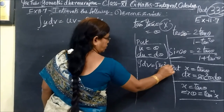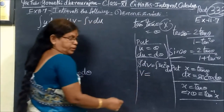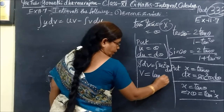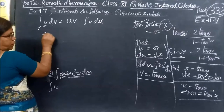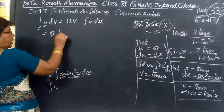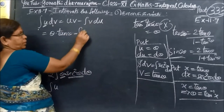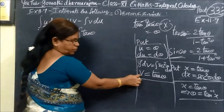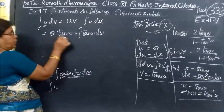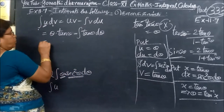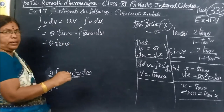So applying integration by parts: U is θ, V is tan θ. The result is θ times tan θ minus integral of tan θ dθ.